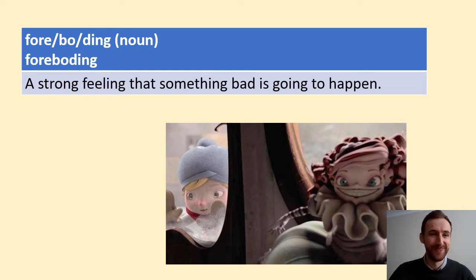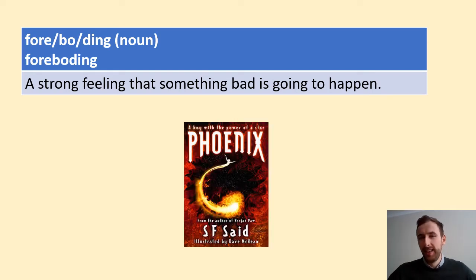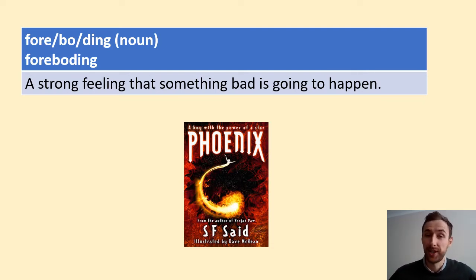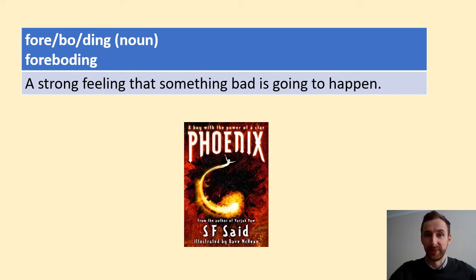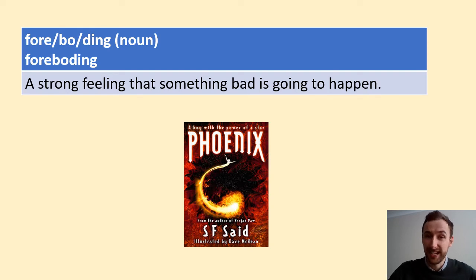Think back to our previous text, Phoenix. There were several places in Phoenix where the author created a sense of foreboding. For example, when the shadow ship descended and Lucky saw the shadow ship for the first time, there was a real sense of foreboding. We got the sense as readers that something bad was about to happen. And that did materialise with the death of Lucky's mother through the attack of the shadow gods.